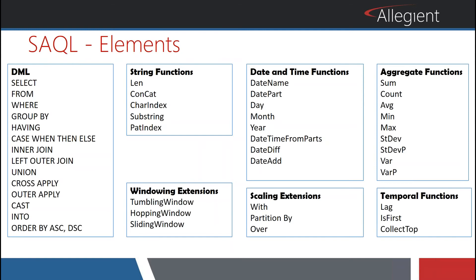The SAQL elements — if you take a look, a lot of this is just normal T-SQL. You've got your SELECT, FROM, WHERE, GROUP BY, HAVING, LEN, CHARINDEX, SUBSTRING, DATEPART, MONTH, DATEADD, DATEDIFF, SUM, COUNT, and ABS. You've also got partitions, PARTITION BY, OVER, LAG, IS FIRST, COLLECT, TOP. Those are somewhat different from what you'd normally use. The ones that are very different and exclusive to SAQL are the windowing extensions.